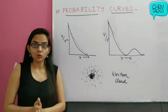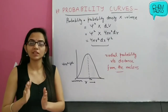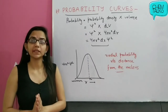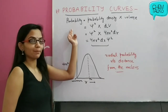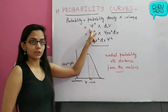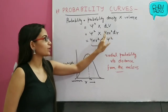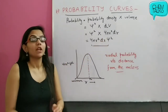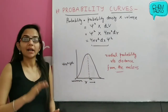Now, the next representation we use is the radial probability distribution curves. We have seen the variation of probability density with distance from the nucleus. But if we want the actual probability for an infinitesimally small region, we calculate it as the product of probability density times the volume of that region. Probability = psi-square × dV, where dV = 4πr²dr.